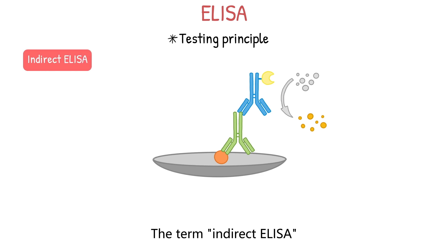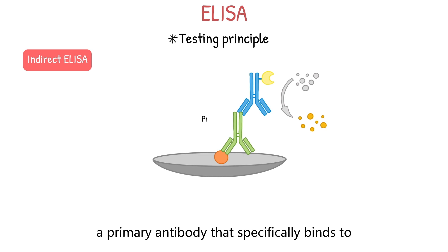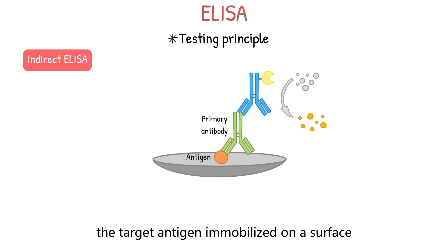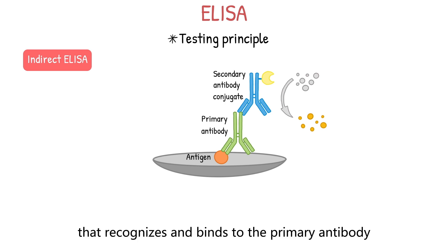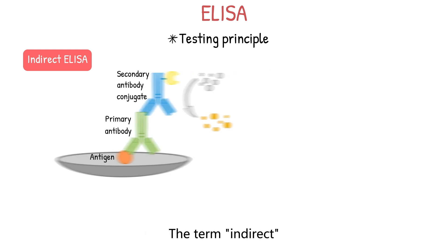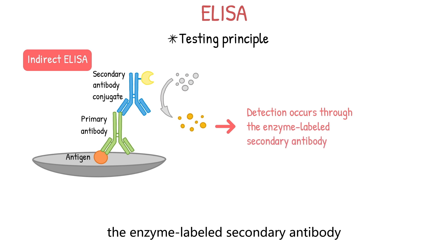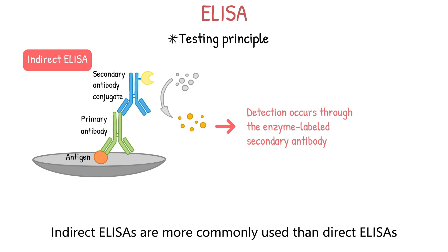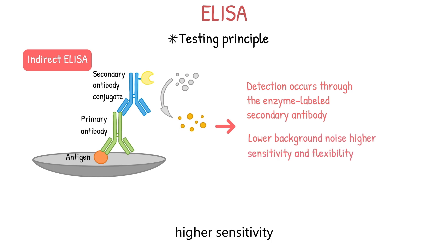Indirect ELISA refers to an ELISA technique using two antibodies: a primary antibody that specifically binds to the target antigen immobilized on a surface, and a secondary enzyme-labeled antibody that recognizes and binds to the primary antibody. The term indirect indicates that detection occurs through the enzyme-labeled secondary antibody, not a labeled primary antibody. Indirect ELISAs are more commonly used than direct ELISAs due to their lower background noise, higher sensitivity, and flexibility.